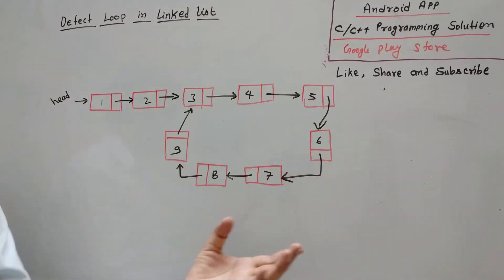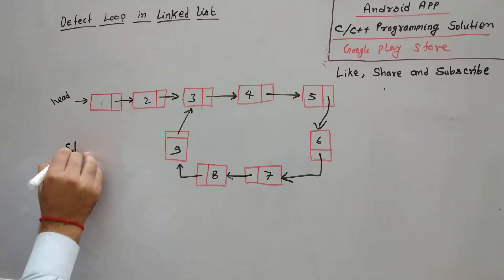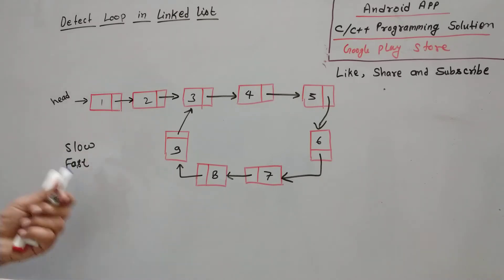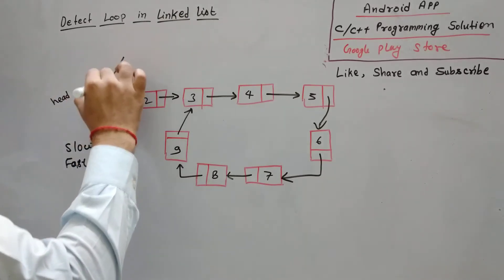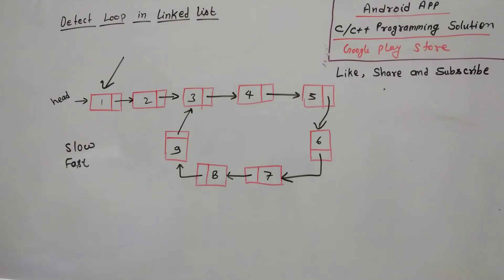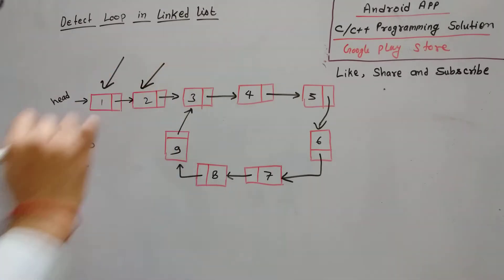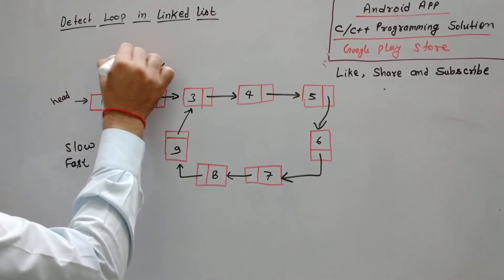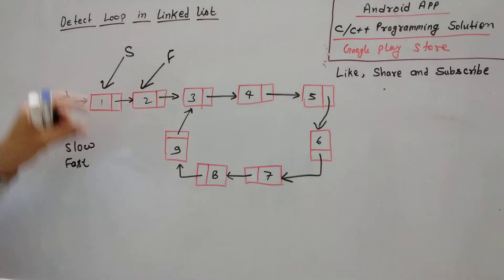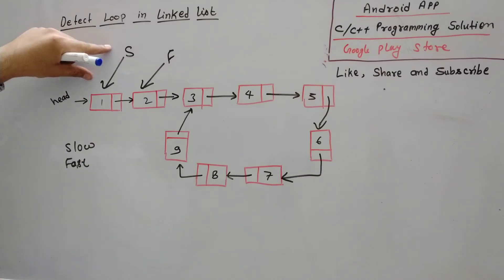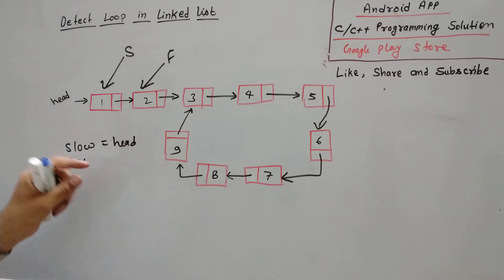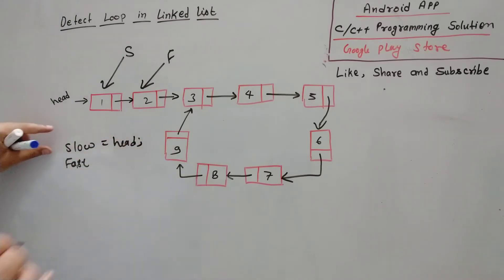So let's start with the problem. I have to find the loop, so what I will do - I will take two pointers. First one is slow and second one is fast. Initially, slow is pointing to the first node, and fast is pointing to the second node. Slow is initialized to head, that means slow equals to head.